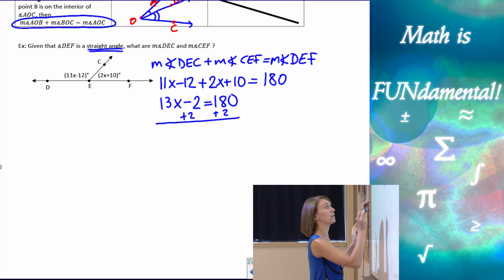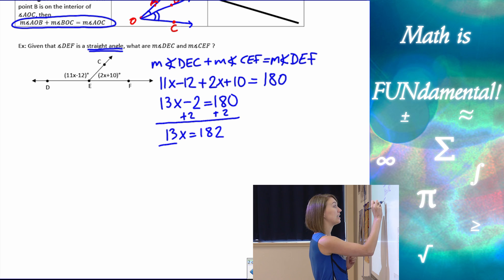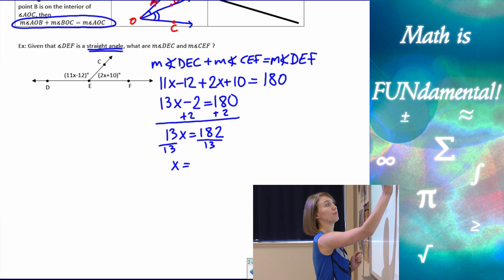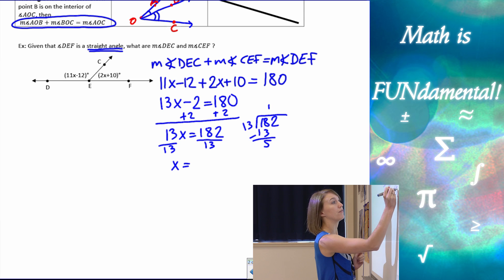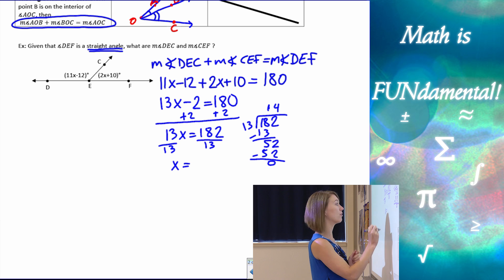We can add our 2 to the other side. 13x is going to be 182. And then we can divide by 13 on either side. And let's see what that's going to be. If we don't have a calculator, we can always work this out by hand. 52 goes into 13 four times. Double check. Yep, that works out. So we end up with x is 14.